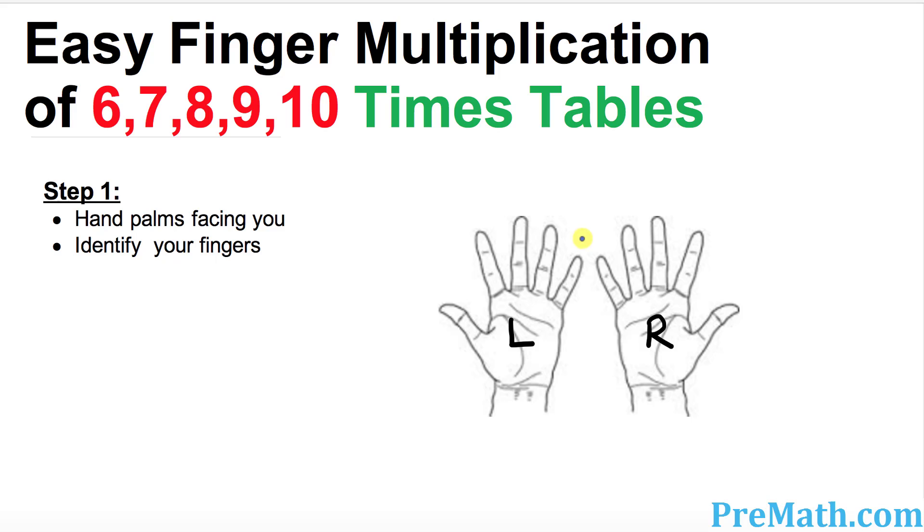Let's start off with the smallest finger to the bigger ones. The smallest finger, the pinky, is 6. Ring finger 7, middle finger 8, index finger 9, and your thumb is 10.